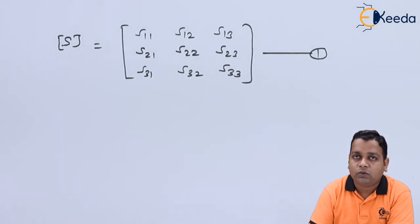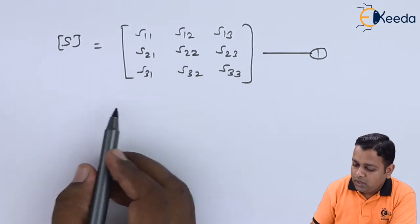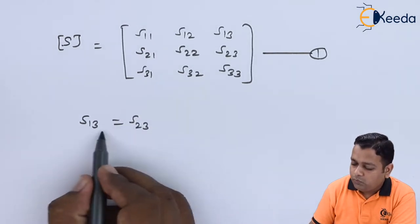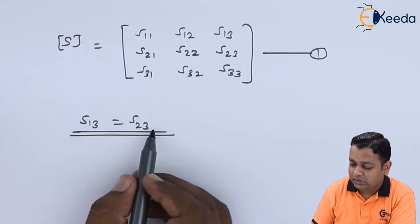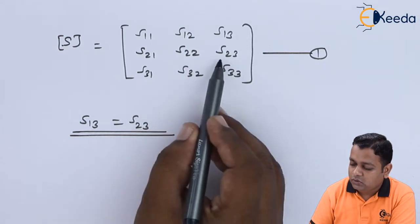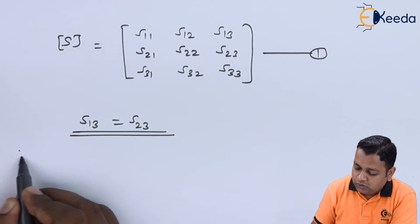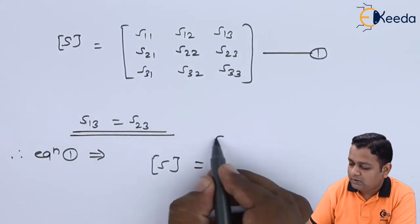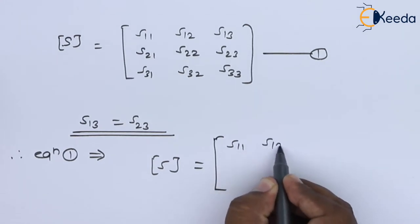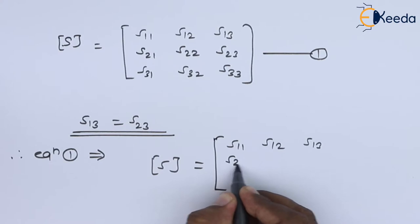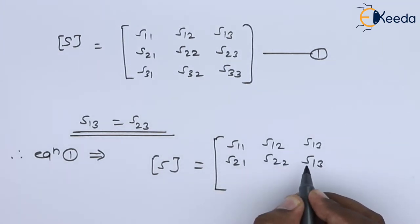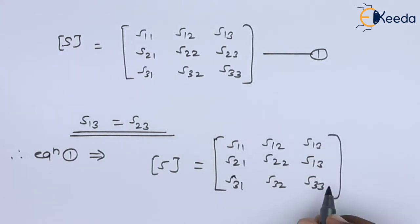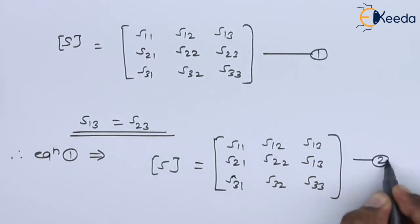From the plane of symmetry of H-plane T, we know that scattering coefficient S13 equals scattering coefficient S23. So in equation number 1 where it is S23, we can replace it by S13. Therefore equation number 1 implies the scattering matrix S with first row S11, S12, S13; second row S21, S22, S13; and third row S31, S32, S33. This is equation number 2.